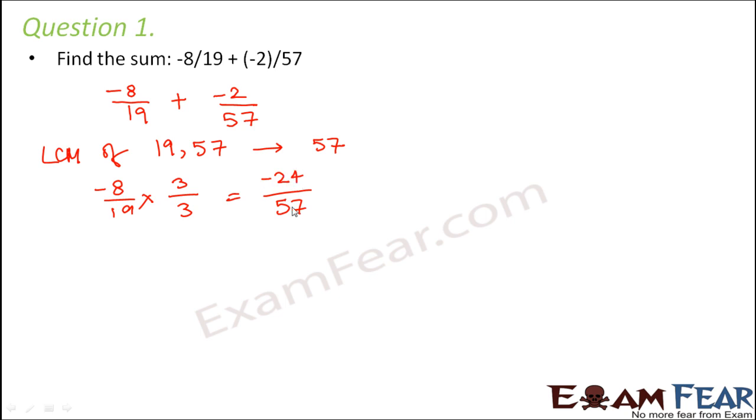So you get -24/57. Therefore, -8/19 can be written as -24/57 + (-2/57). So now you have same denominator.